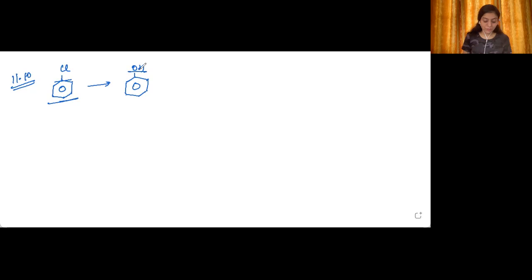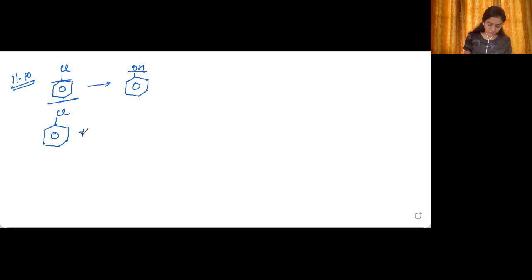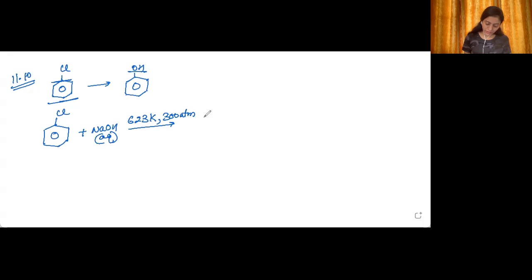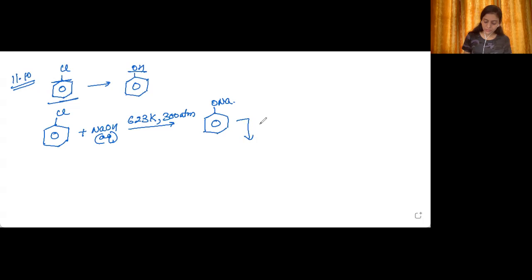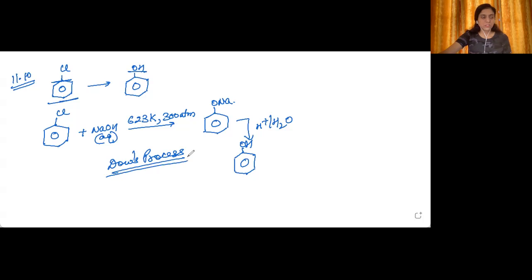Chlorobenzene is treated with aqueous NaOH at a very high temperature of 623 Kelvin and a pressure of nearly 300 atmospheres. This leads to the formation of sodium phenoxide. After this, we treat it with dilute acid and it gets hydrolyzed to phenol. This reaction is the Dow process.